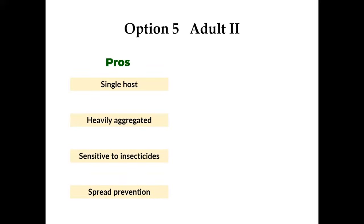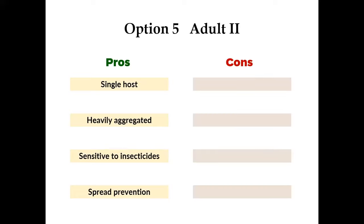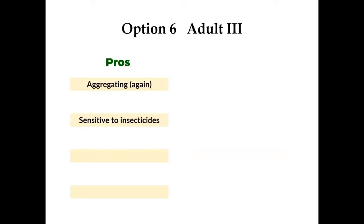About adult stage two — the good news is only a single host. They're heavily aggregated, sensitive to insecticides and spray. If you treat at this stage, you can prevent them from spreading to other hosts after they've become reproductively mature. I don't see any bad news about treating under adult stage number two.